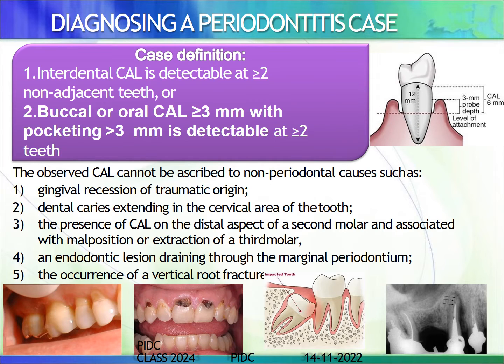How do you diagnose a periodontitis case? If there is interdental clinical attachment loss present between 2 teeth, and the buccal attachment loss level is more than 3 mm with pocketing of more than 3 mm detectable at 2 teeth, then we diagnose it as periodontitis. However, the observed clinical attachment loss cannot be ascribed to non-periodontal causes such as gingival recession of traumatic origin, dental caries, clinical attachment loss on the distal aspect of a second molar associated with malposition or extraction of a third molar, an endodontic lesion draining through the marginal periodontium, or a periodontal root fracture.